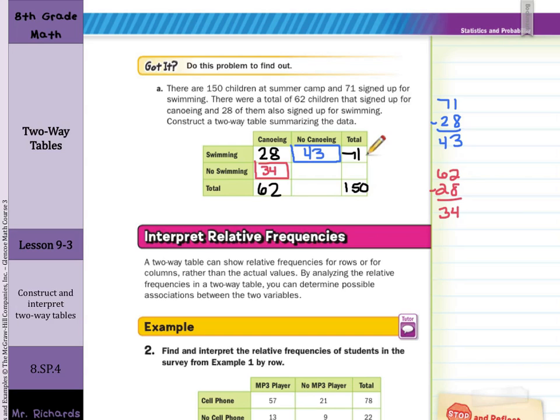Next, we might as well get this box completed. There are a total of 150 students or children. 62 of those are here. So we can take 150 minus the 62 is 88. So we have 88 students or children there. Now we can finish these last two boxes here. For that one, we can take the 88 minus the 43 to get 45.